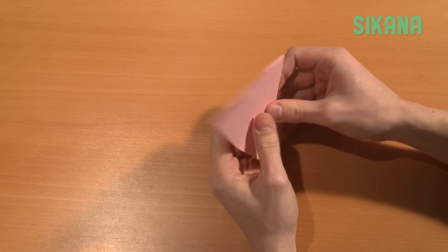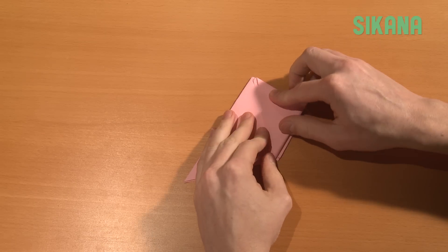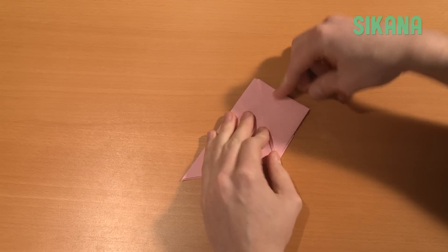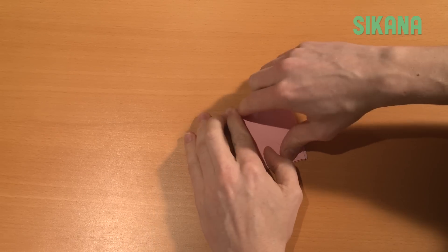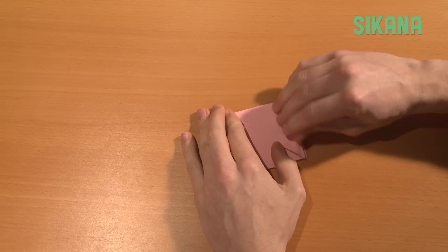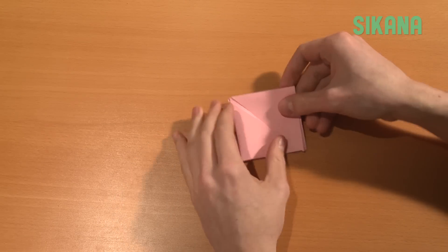Flip the sheet and repeat for this side. Fold onto the center line. Fold these two points toward the center.